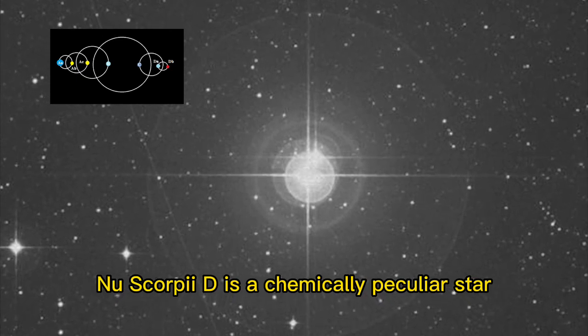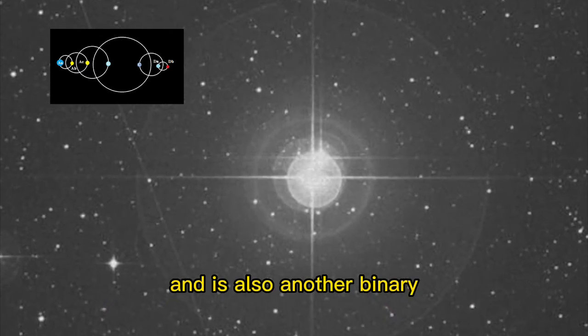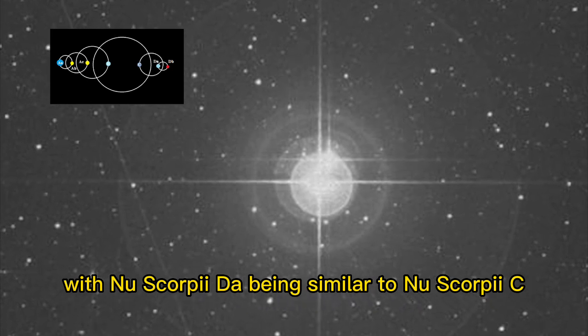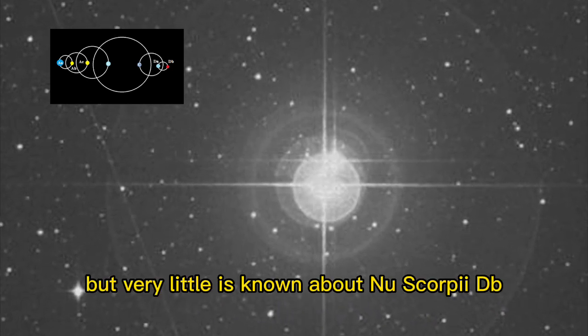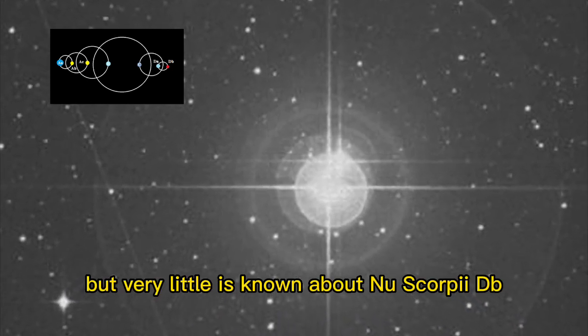Nu Scorpii D is a chemically peculiar star and is also another binary, with Nu Scorpii Da being similar to Nu Scorpii C, but very little is known about Nu Scorpii Db.